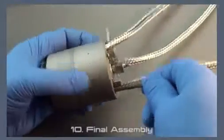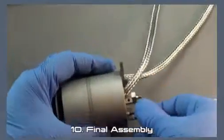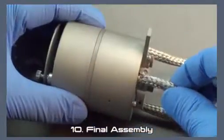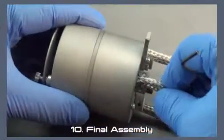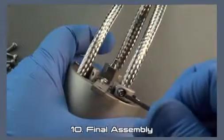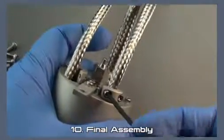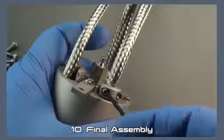Slide the back body down to the standoffs and secure. Push the ferrules of each lead down below the clamp collars. Install the clamp collars, alternating between screws a few turns at a time.